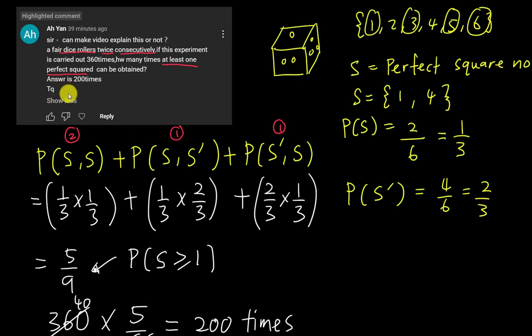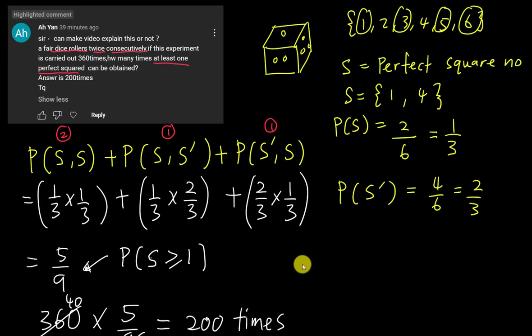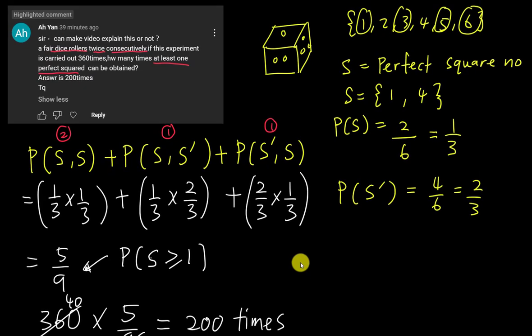So the student also told me the answer is 200. So yeah, this is how you get 200. Yeah, I hope this probability question can help this student and also my other students on my YouTube to understand better about probability topics. Alright, I hope you enjoy this video. Please give me a like and then I will see you guys in the next video. Bye bye. Take care.